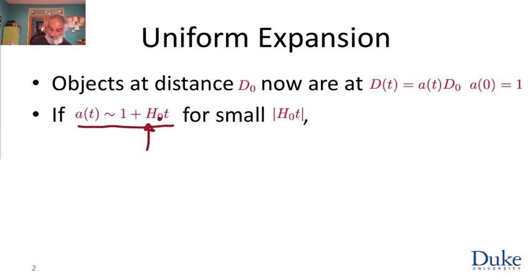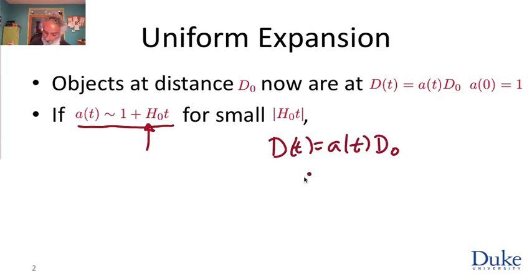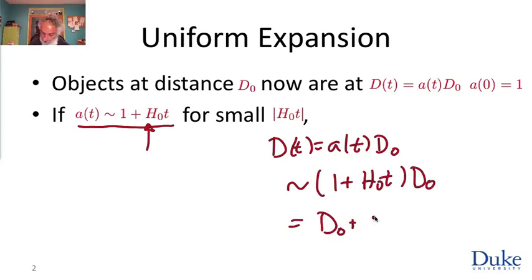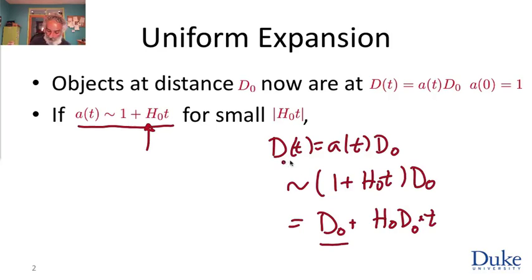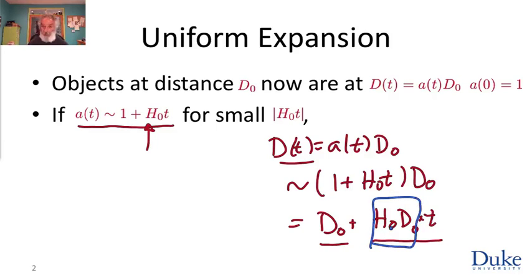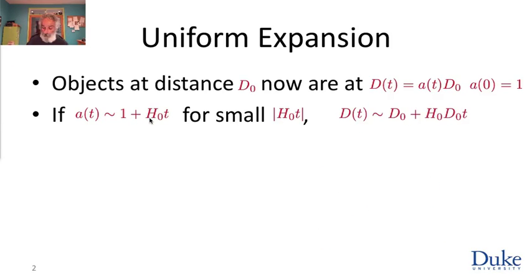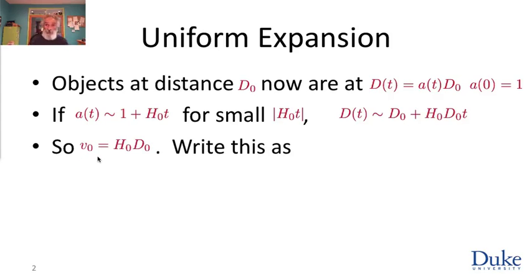What does this mean? If a(t) ≈ 1 + H₀·t, I plug that in and get d(t) = a(t)·d₀ ≈ (1 + H₀·t)·d₀ = d₀ + H₀·d₀·t. The change in distance divided by time elapsed gives the velocity. So the speed with which an object recedes from us at the present time is H₀ times its distance from us. Thus, uniform expansion by a common scale factor describes the expansion that Hubble found.